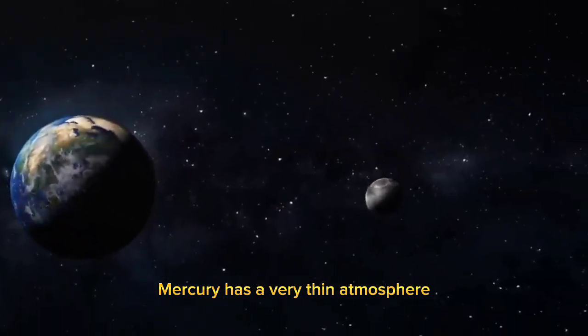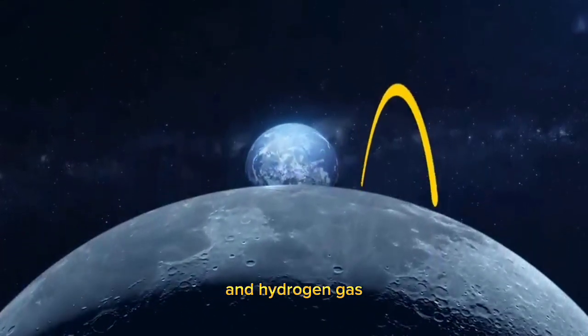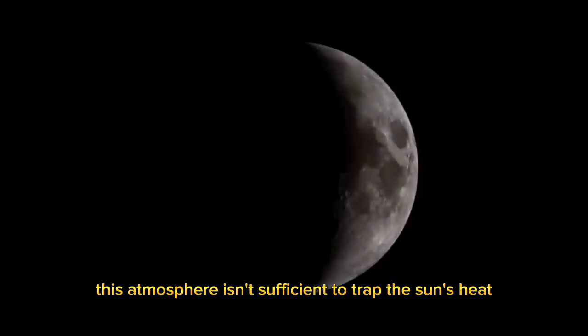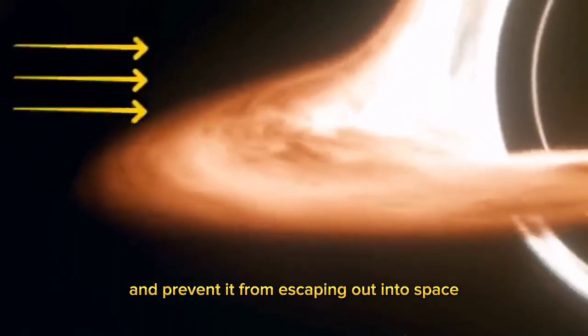Mercury has a very thin atmosphere that is predominantly made up of helium and hydrogen gas. This atmosphere isn't sufficient to trap the Sun's heat and prevent it from escaping out into space.